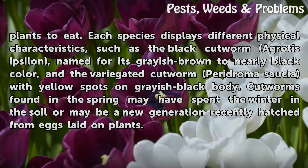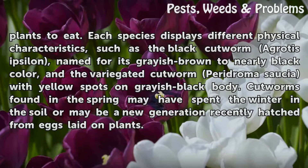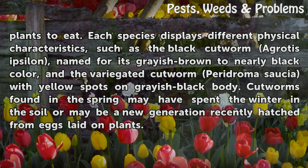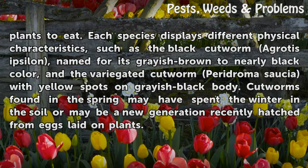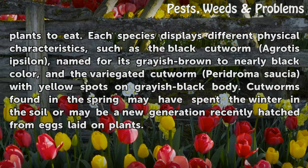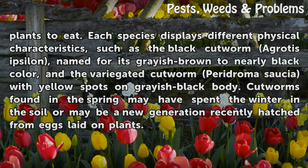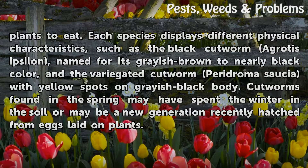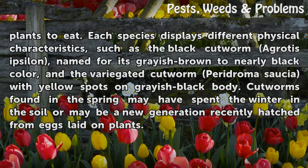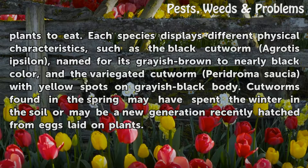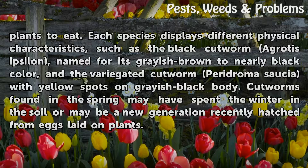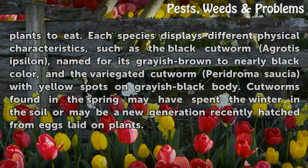Working the soil in the spring usually turns up at least a few of these culprits as they lie in wait for new plants to eat. Each species displays different physical characteristics, such as the black cutworm (Agrotis ipsilon), named for its grayish-brown to nearly black color, and the variegated cutworm (Peridroma saucia) with yellow spots on its grayish-black body. Cutworms found in the spring may have spent the winter in the soil or may be a new generation recently hatched from eggs laid on plants.